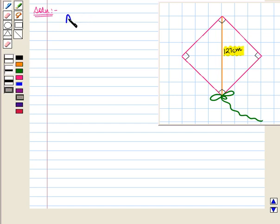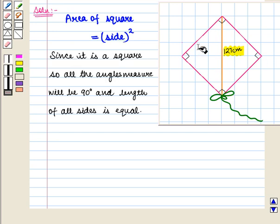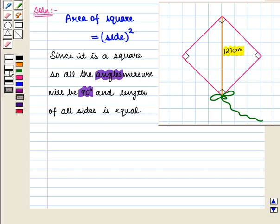Now, we know that area of square is equal to side squared. So, to find the area of the kite we first need to find the length of its side. Since it is a square, all the angles measure 90 degrees and length of all sides is equal.